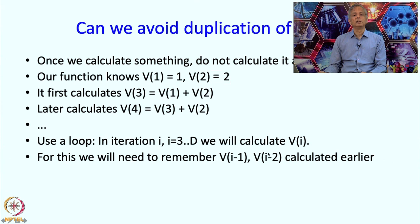Which means these values we could print out if we wish, but we do not really need to print them out if we are only interested in the final Vd. But in any case, in the ith iteration we should be remembering these values. These values should be there so that we can add them up and generate Vi.